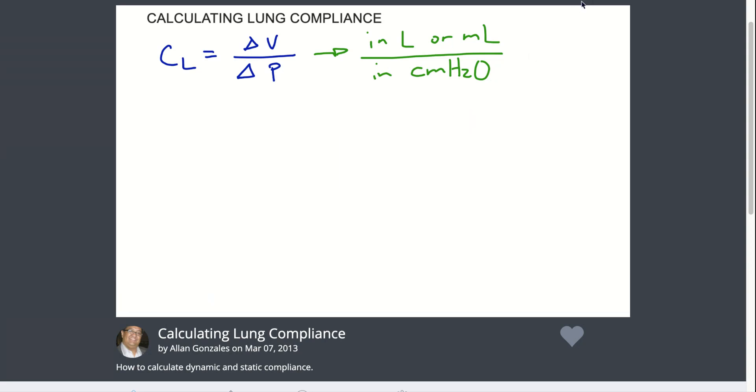To calculate lung compliance, the equation is the change in volume over the change in pressure. The unit of measurement on the numerator, the volume, is in liters or milliliters, and the change in pressure is in centimeters of water pressure.